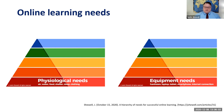Maslow's first need was physiological needs — you have to have food and clothing and a place to sleep before you can really worry about anything else in your life. With online learning, it's very similar. You have to be able to actually connect to the teacher and to the resources. So you have to have equipment and you have to have a connection.